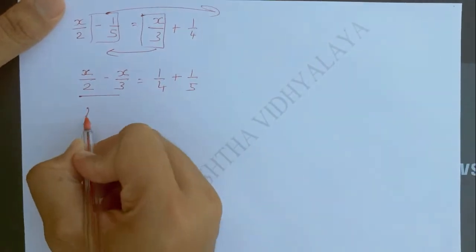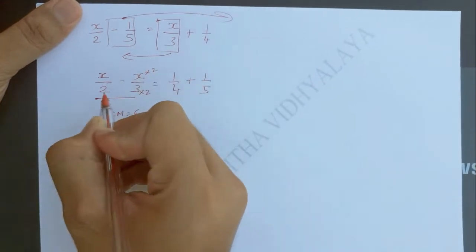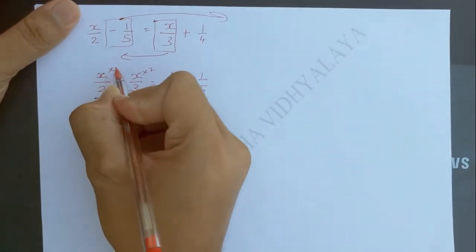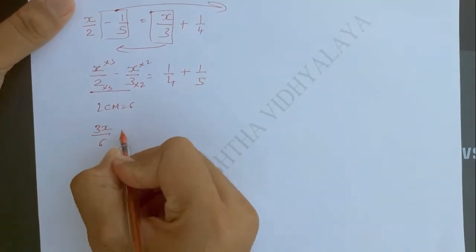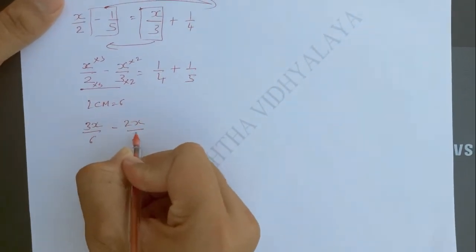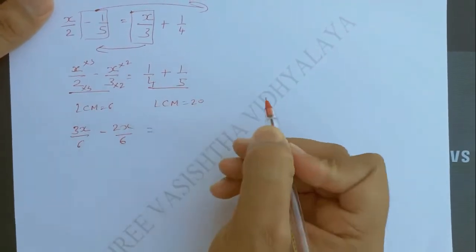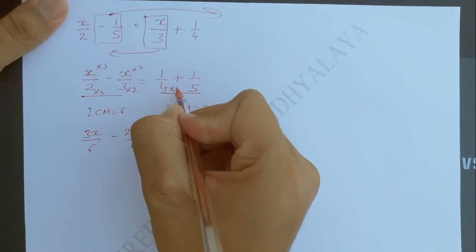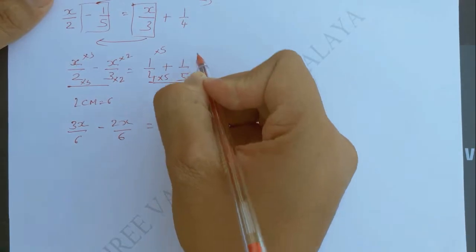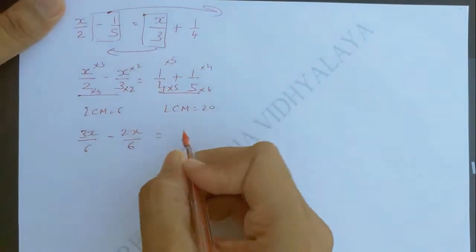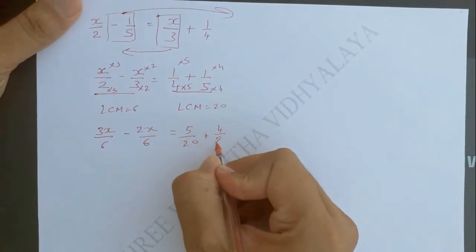Now, the LCM of 2 and 3 will be 6. So we will multiply: 3 by 2 and 2 by 3. So 3 into x will be 3x upon 6 minus 2 into x will be 2x upon 6. On the RHS, the LCM of 4 and 5 will be 20. So 4 will multiply with 5 and 5 will multiply by 4. So 5 ones are 5 by 20 plus 4 ones are 4 by 20.